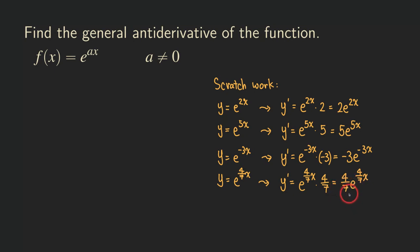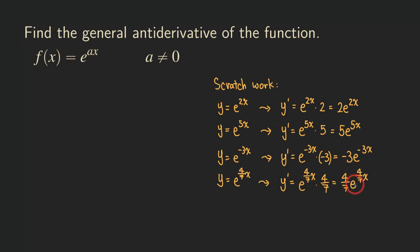Do you see the pattern? We did four problems. When we differentiate e to some number times x, we get that number in the front as the coefficient. If the exponent is 2x, we get a 2 in front. If the exponent is 5x, we get a 5. If it's negative 3x, we get negative 3. And even with a fraction like 4 over 7 in front of the x, we get 4 over 7 in front of the whole function.